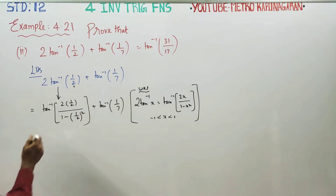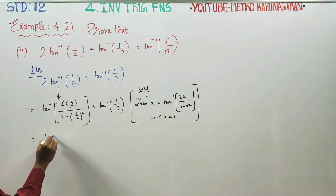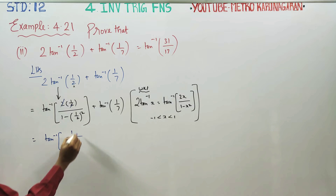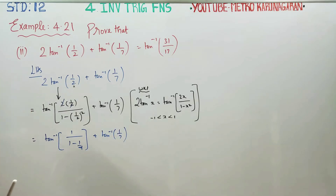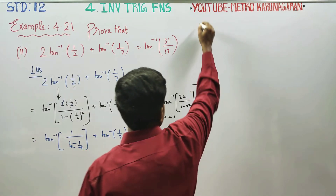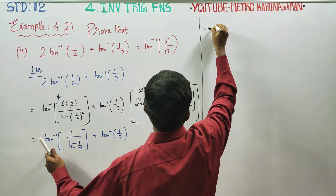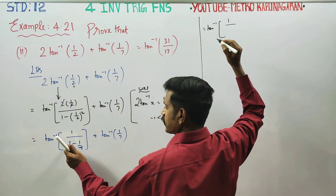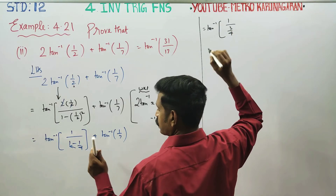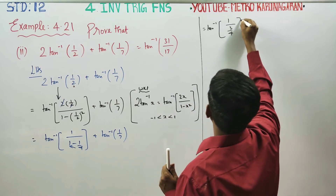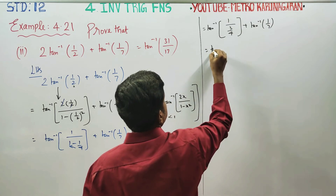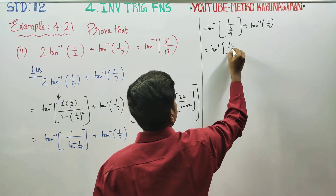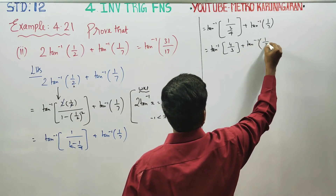At the next stage, we compute: the denominator 1 - 1/4 = 3/4, so we get tan⁻¹(1 ÷ (3/4)) = tan⁻¹(4/3). Therefore the expression becomes tan⁻¹(4/3) + tan⁻¹(1/7).